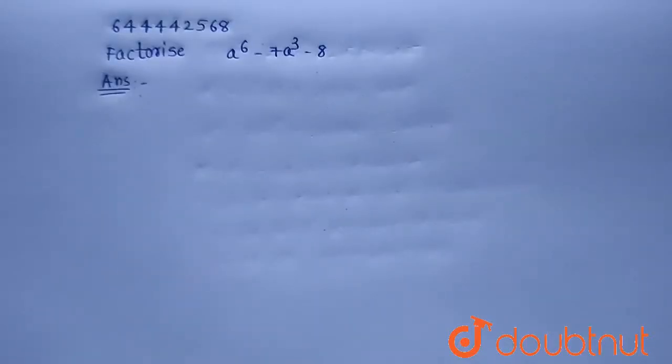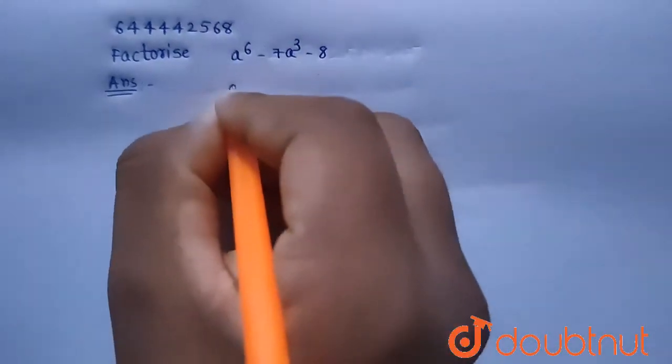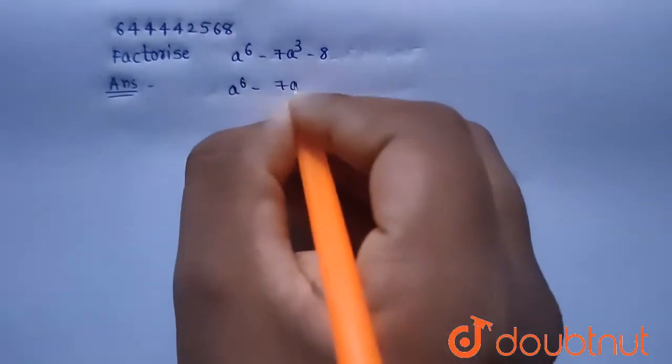Hello everyone, today's our question is factorize a^6 minus 7a^3 minus 8. So the given expression is a^6 minus 7a^3 minus 8.